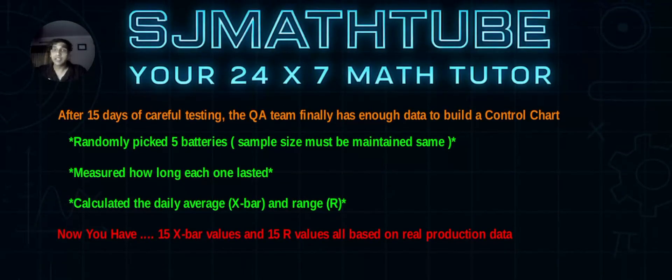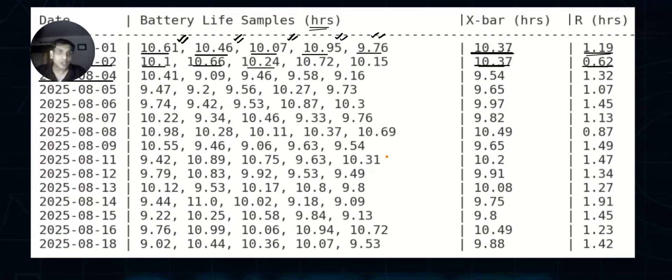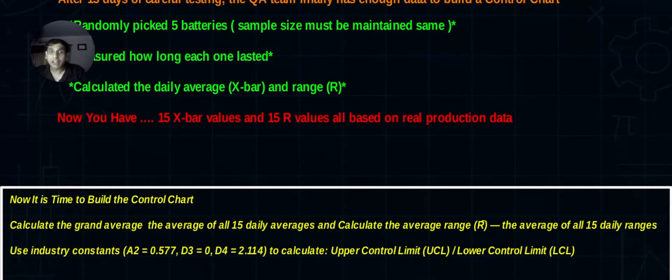This continued for 15 days. After 15 days, you have 15 X-bar values and 15 R values. Listen carefully: you have 15 X-bar values - one, two, three, etc. And 15 R values. R value means the range value. After 15 days, you are confident to produce the first control chart.